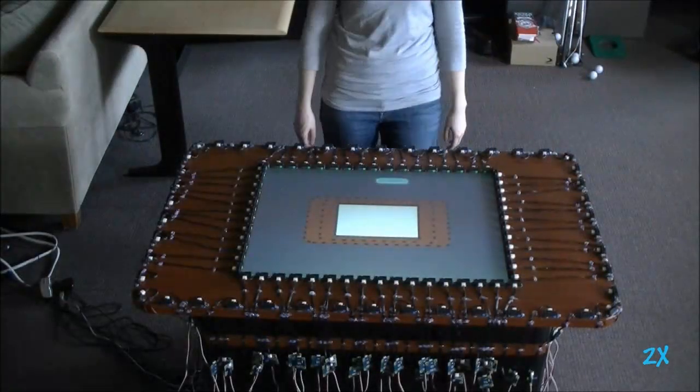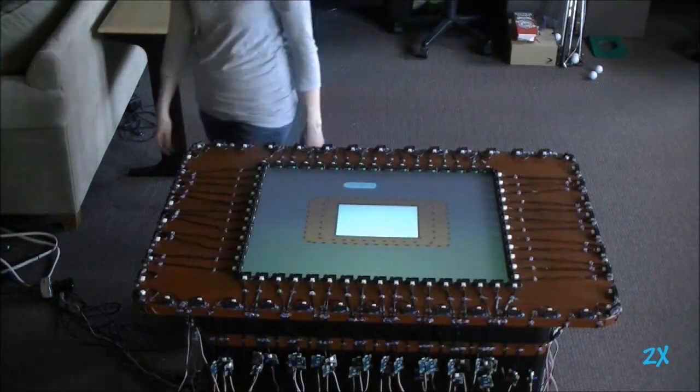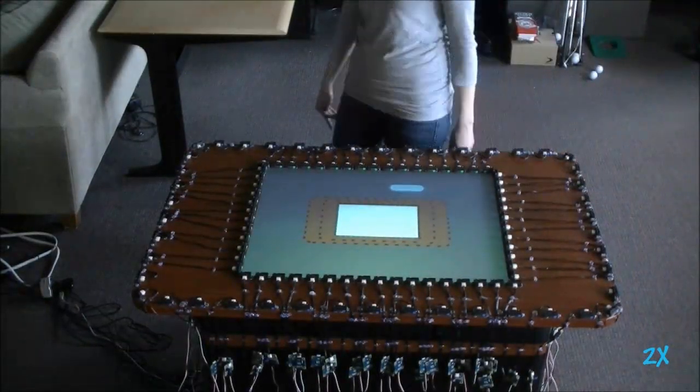As a user approaches the display, their body is detected and its approximate location is determined by the outward facing sensors. The user's location and distance from the tabletop is continually monitored as the user walks around the surface.